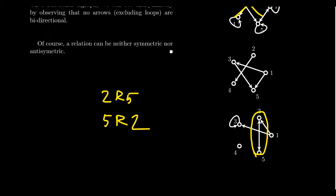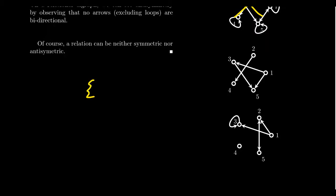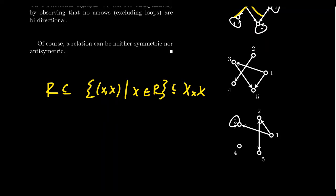You can have relations that are both symmetric and anti-symmetric. If you take any relation that is a subset of the equality relation — where only X is related to X for every X — it will be both symmetric and anti-symmetric. It turns out the only symmetric and anti-symmetric relations are exactly those which are subsets of the equality relation.